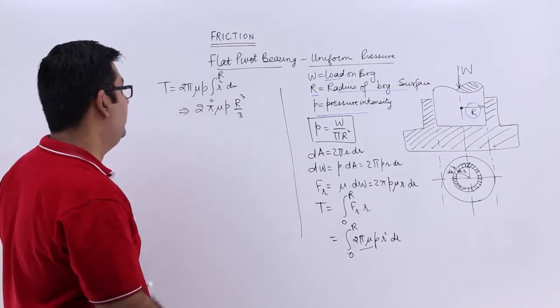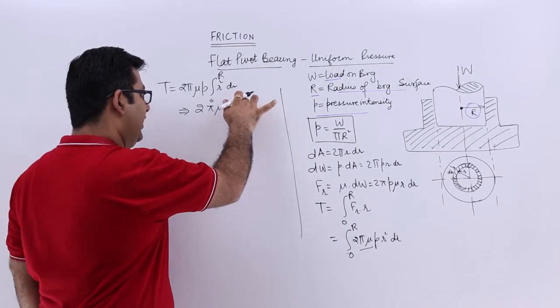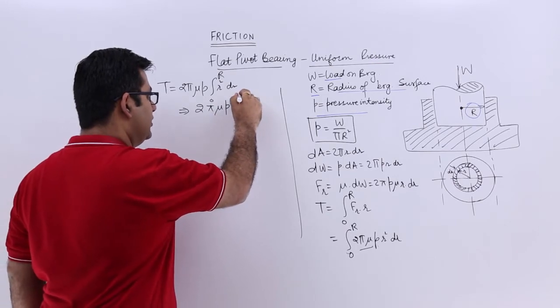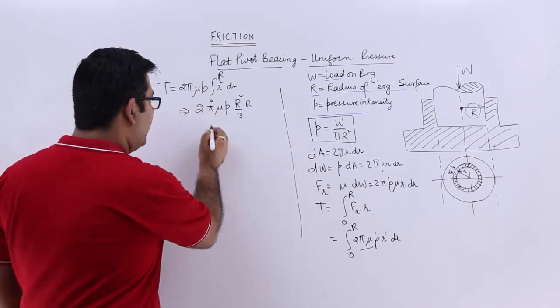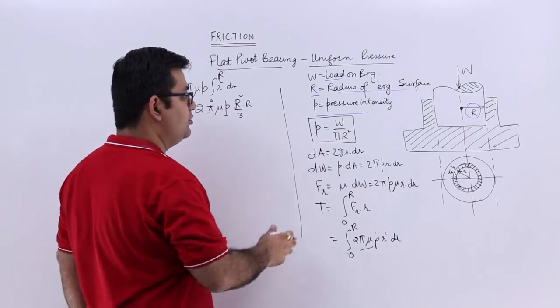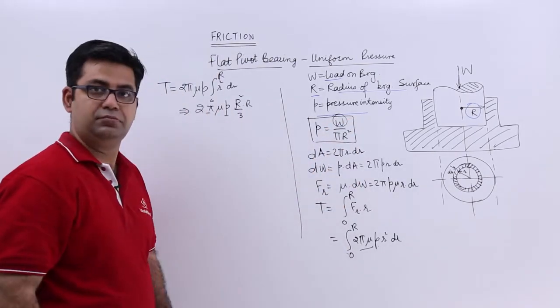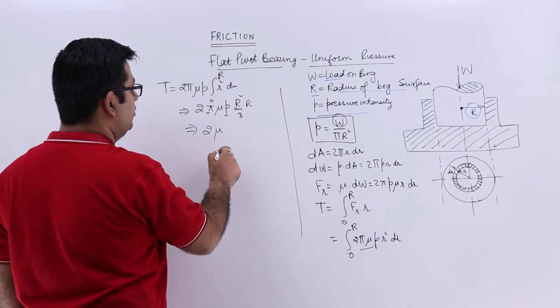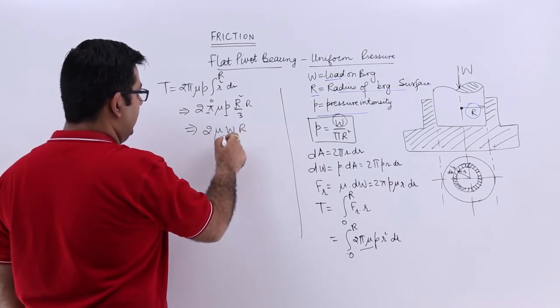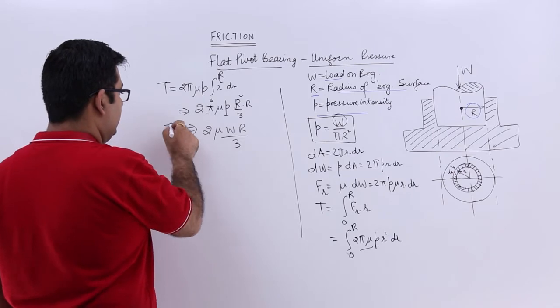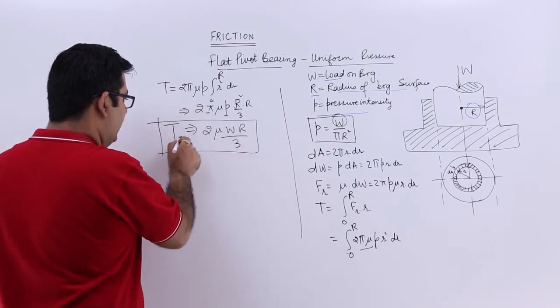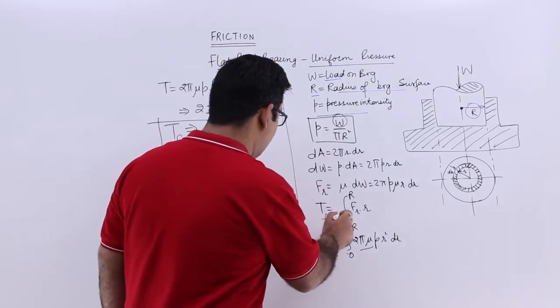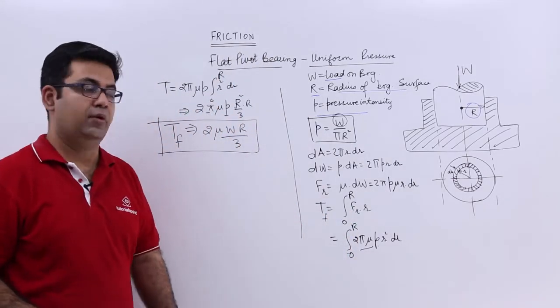Now look carefully. If you rewrite this as r into r square, so pi into r square into P, this gives you W. So this becomes 2 mu W r upon 3. That is the torque required to overcome friction.